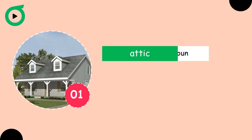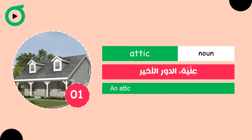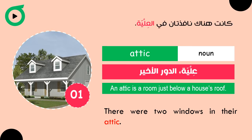Attic. An attic is a room just below a house's roof. There were two windows in their attic.